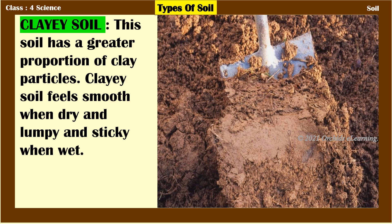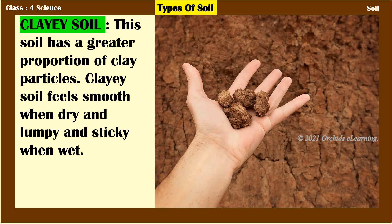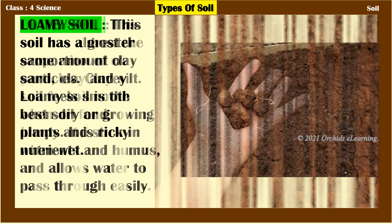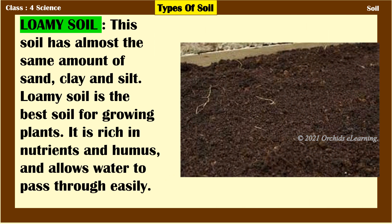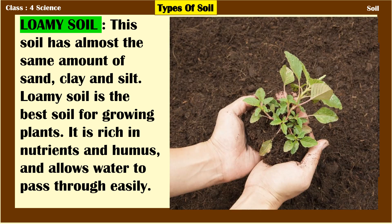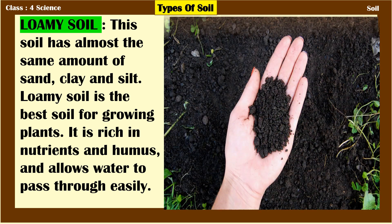Clayey soil has a greater proportion of clay particles. It feels smooth when dry and lumpy and sticky when wet. Loamy soil has almost the same amount of sand, clay, and silt. Loamy soil is the best soil for growing plants. It is rich in nutrients and humus and allows water to pass through easily.